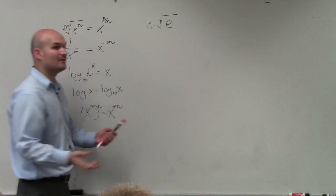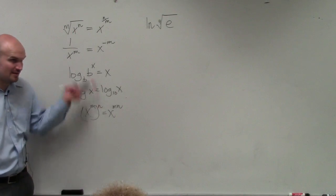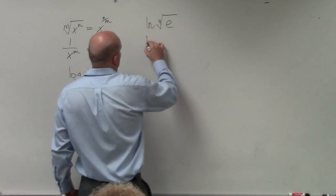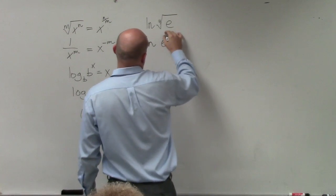So again, get rid of the radical. We have a way to get rid of the radical, right? So let's get rid of the radical. ln of e to the 1/4 power.